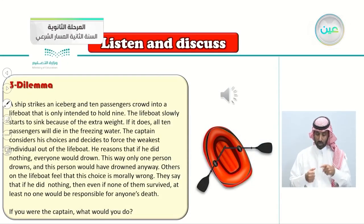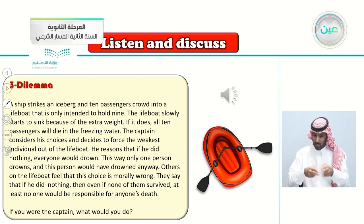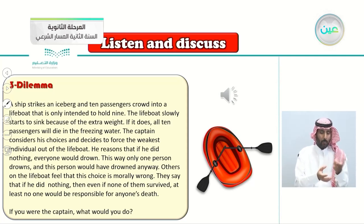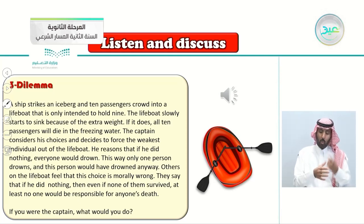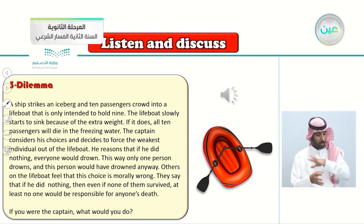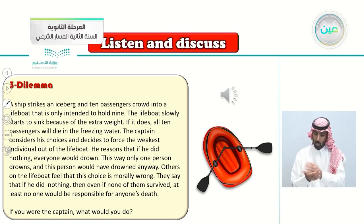Dilemma number three: A ship strikes an iceberg and ten passengers crowd into a lifeboat intended to hold only nine. The lifeboat slowly starts to sink because of the extra weight — if it does, all ten passengers will die in the freezing water. The captain decides to force the weakest individual out of the lifeboat, reasoning that if he did nothing, everyone would drown, but this way only one person drowns. Others on the lifeboat feel this choice is morally wrong, saying that if he did nothing, at least no one would be responsible for anyone's death. If you were the captain, what would you do?